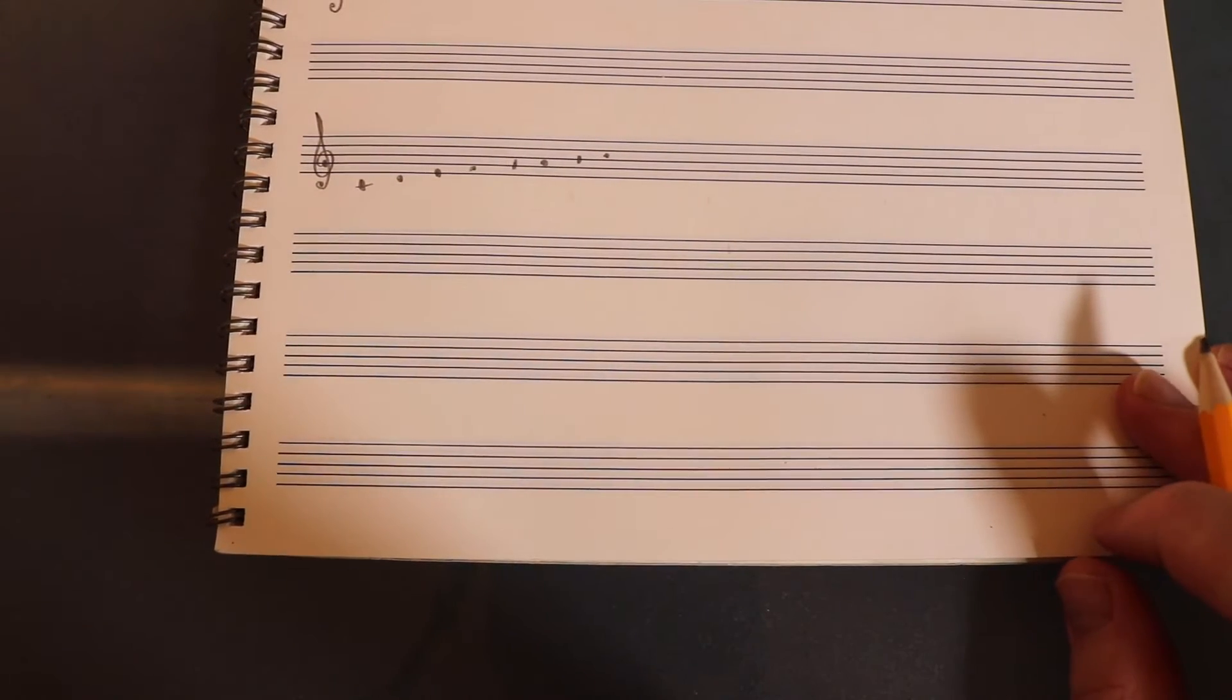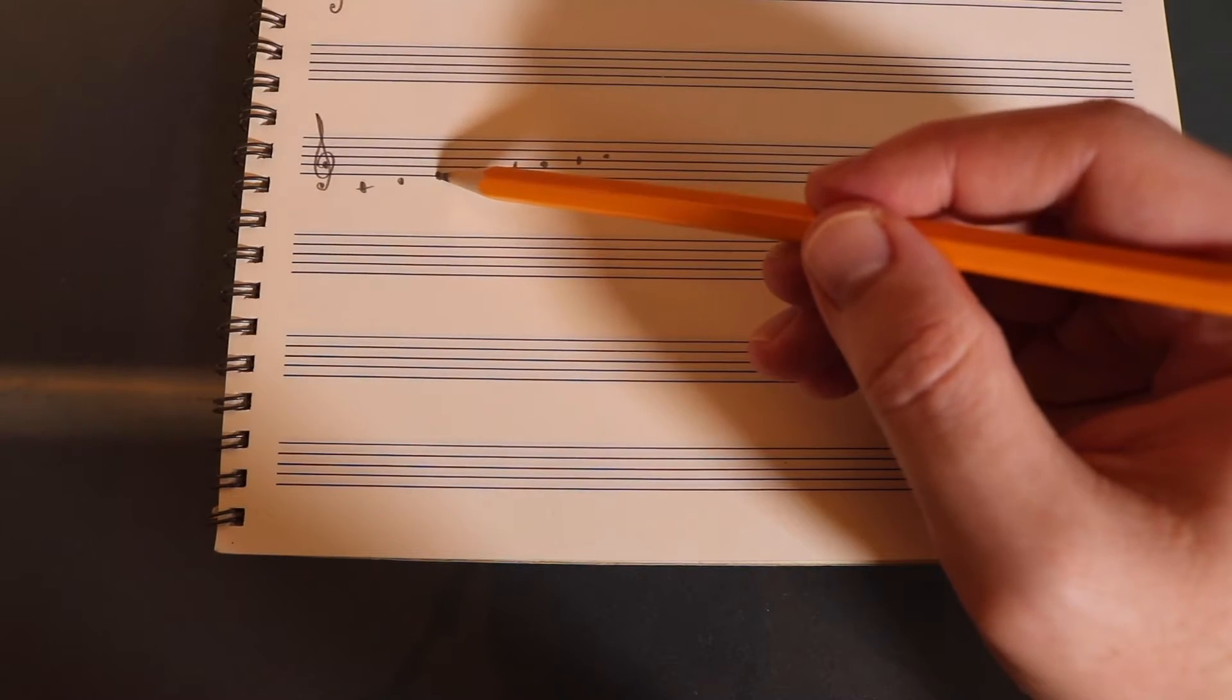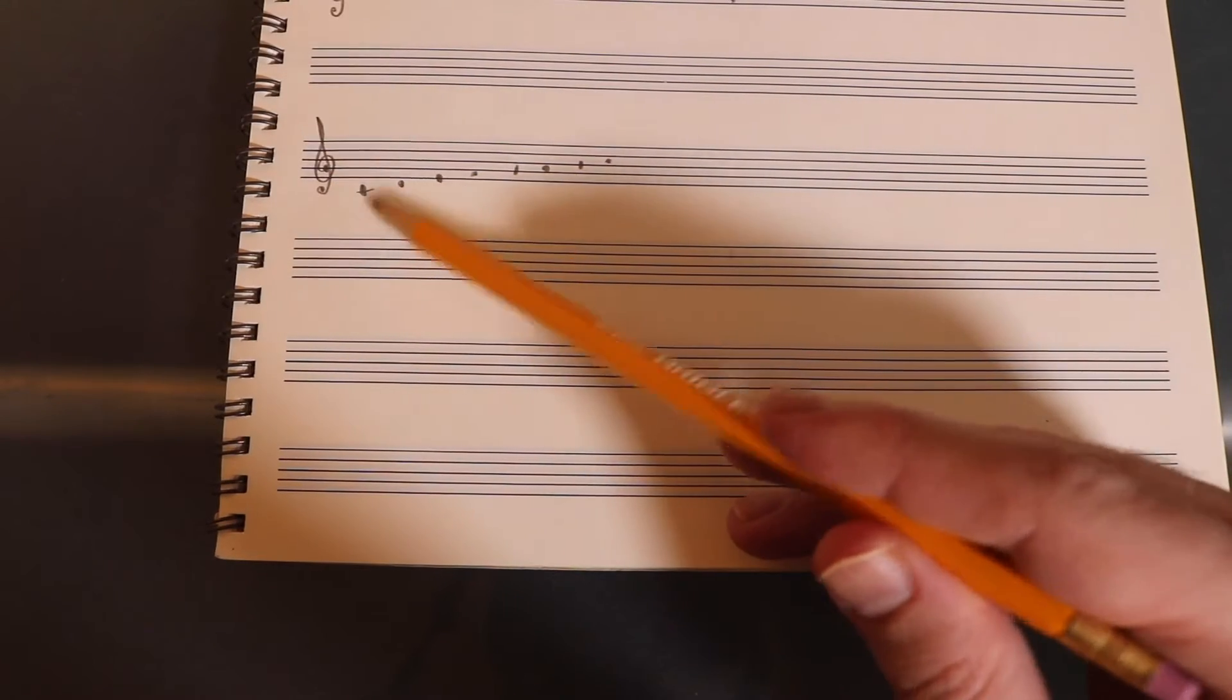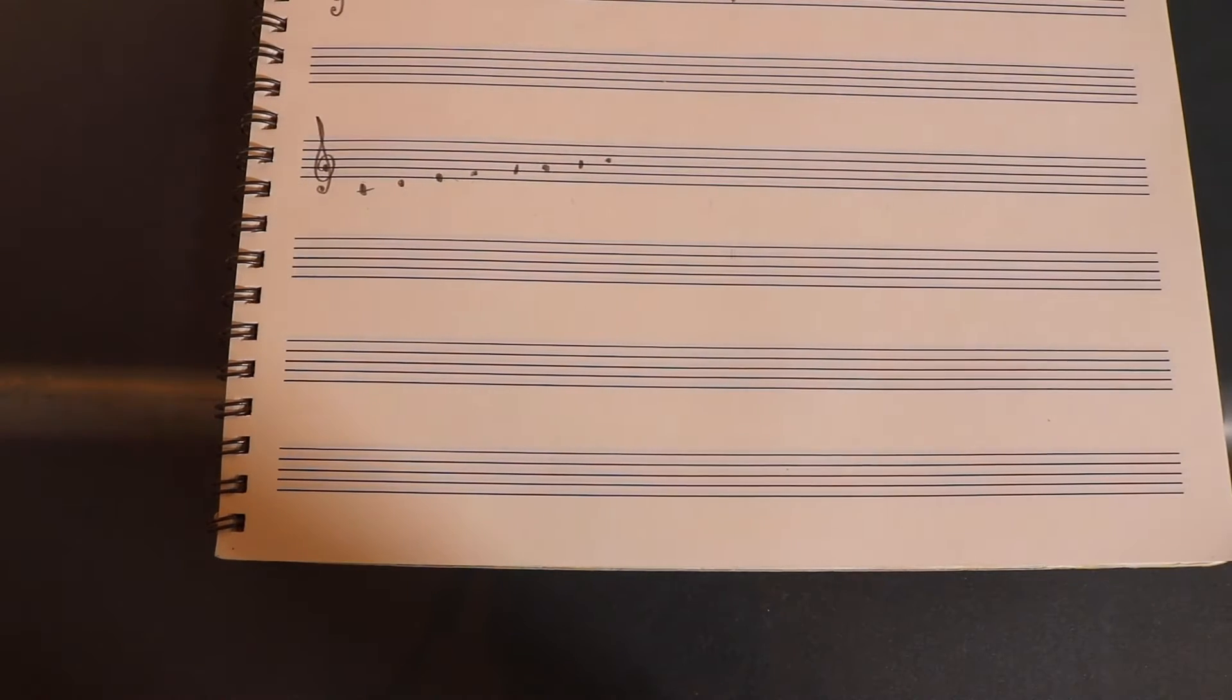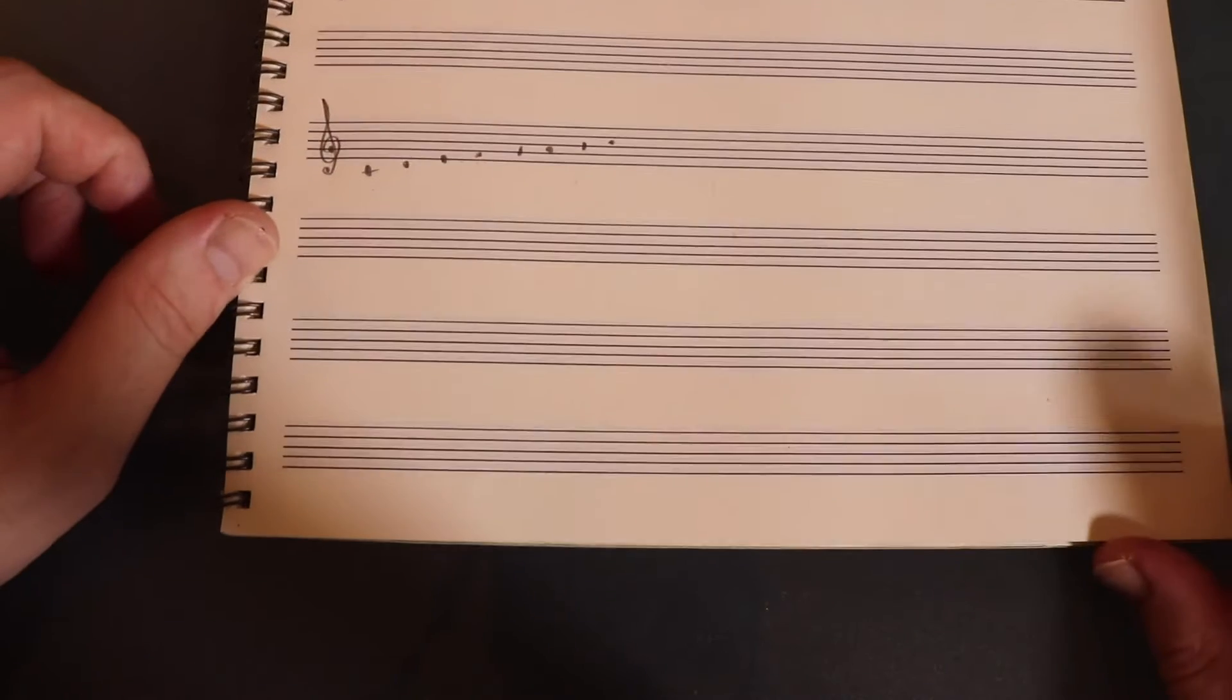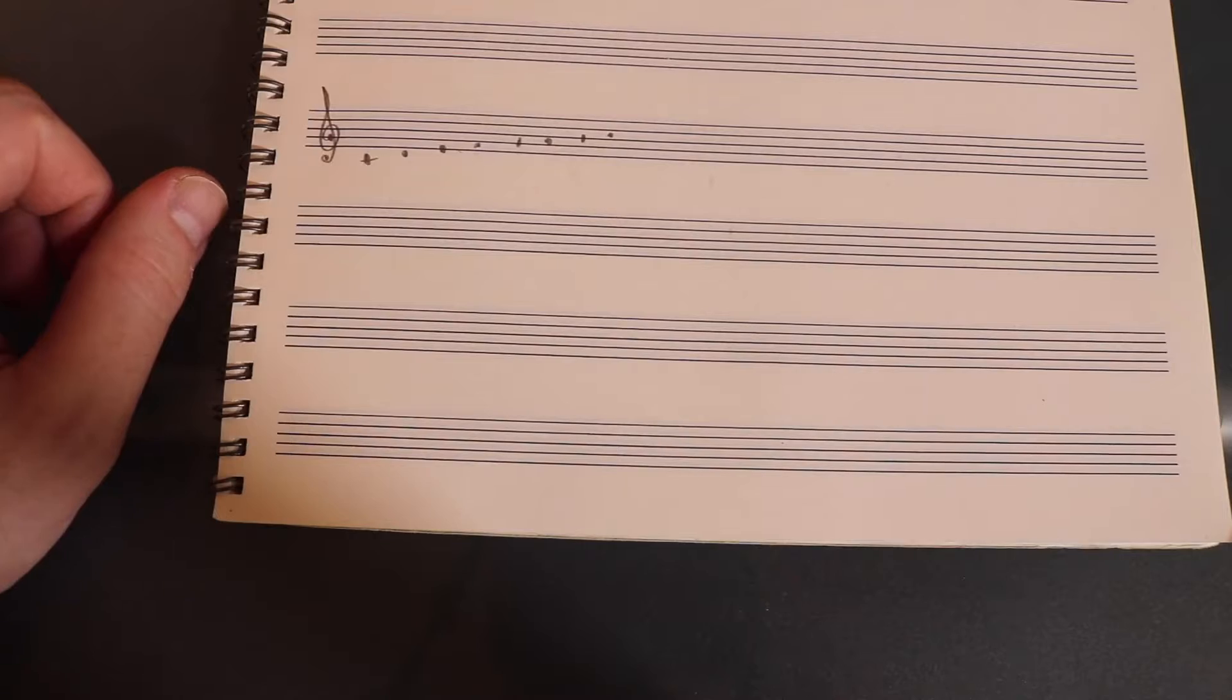Okay now when we talk about scale degrees what we're saying is this would be the third scale degree. I'm counting one, two, three, third scale degree. This would be the fourth scale degree. This would be the fifth scale degree. So that's all we're talking about is how do you find out which number we're talking about. Well the first thing is really simple.